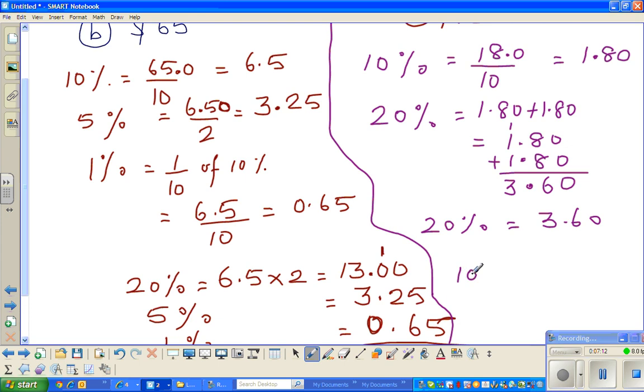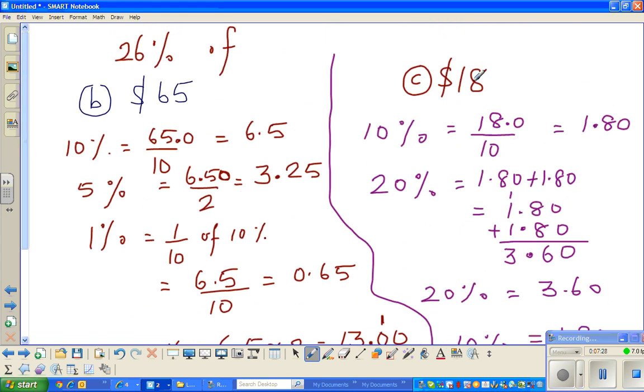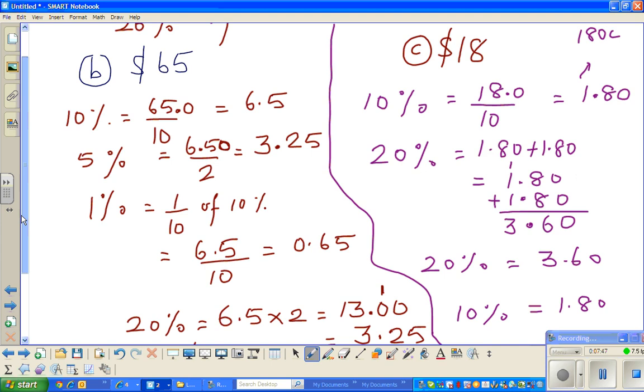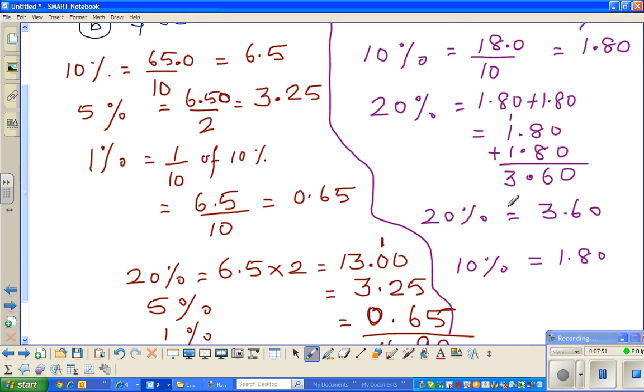So let me rewrite. So 10 percent is 1.80. So you can see this as 180 cents, $1.80. We are finding this is $18. This is $1.80, which is $1 has 80, sorry, 100 cents. So 1.8, you can write this as 180 cents. I'm going to do this in a different way. So 10 percent is $1.80.